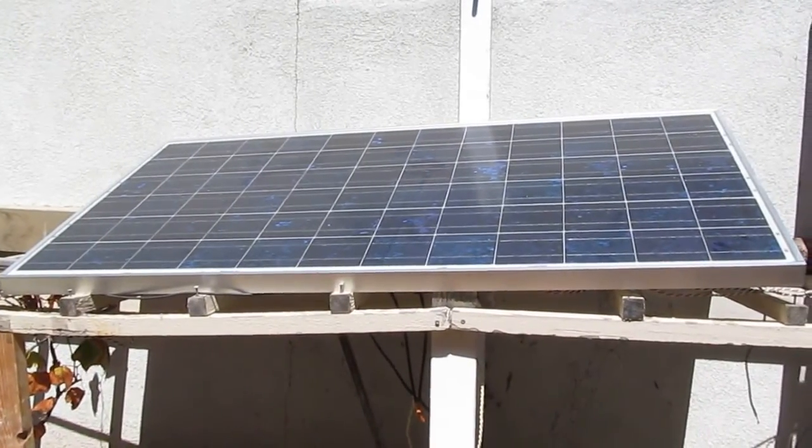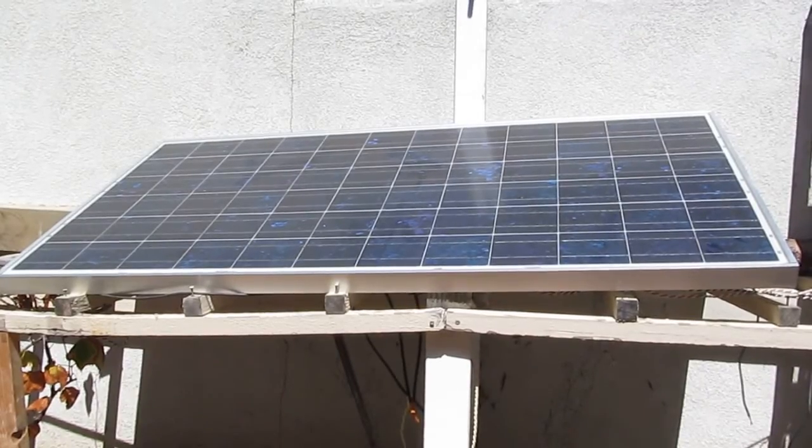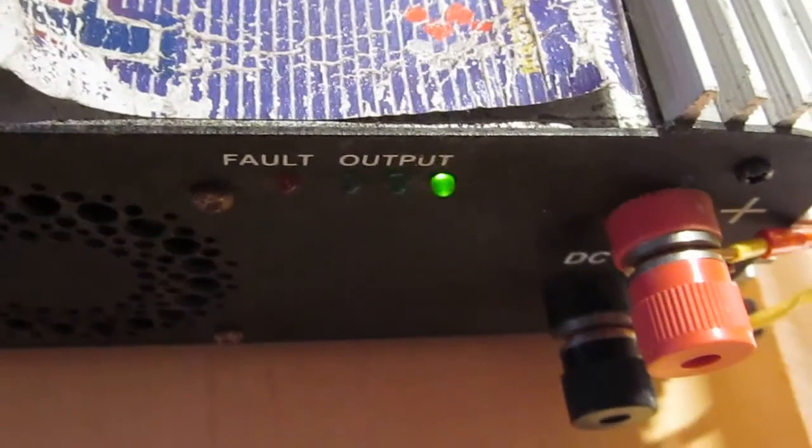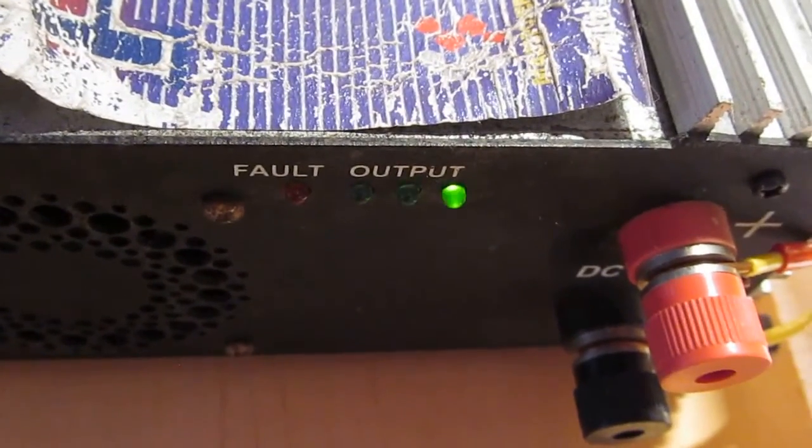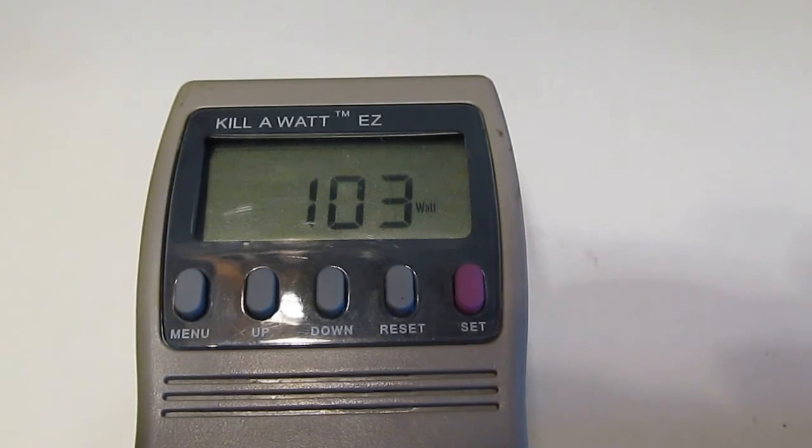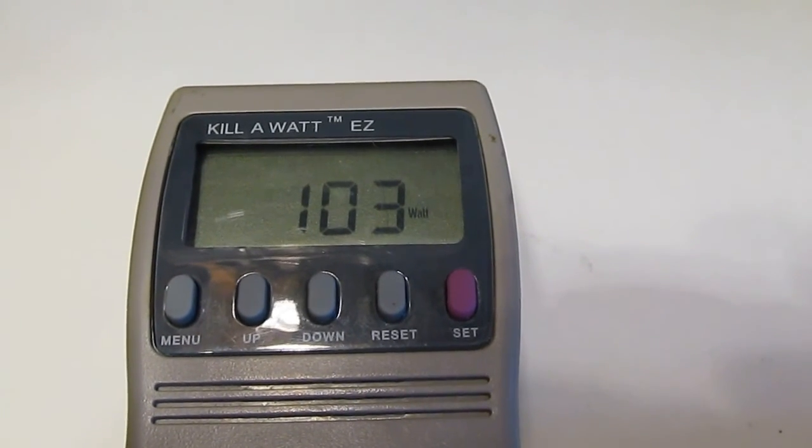First up, it's the Sharp 165 watt solar panel. And the sky is blue and clear today. So it should give us a repeatable result. Alright, it's connected and it's producing power. And currently it's producing 103 watts.